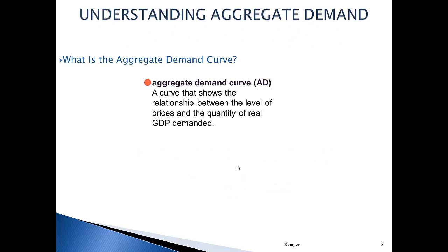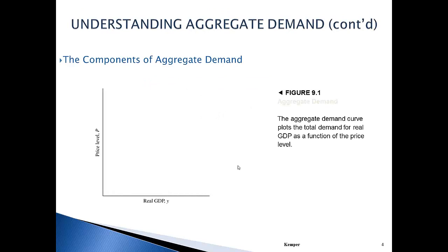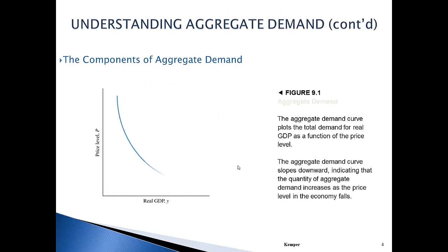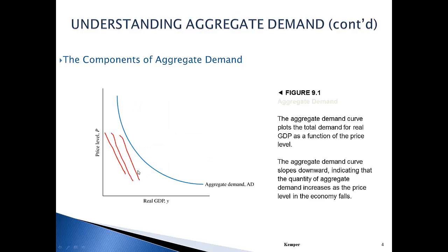Understanding the aggregate demand curve. The aggregate demand curve is a curve that shows the relationship between the level of prices and the quantity of real GDP demanded. If you look at figure 9.1, you will see this graph of aggregate demand. It's very similar to our own individual demand curves — if we took everybody's demand curve, my demand curve plus your demand curve, and added all the demand curves together, we would get aggregate demand.